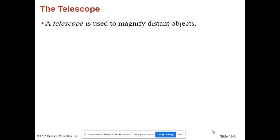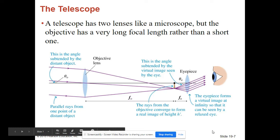The telescope. A telescope is used to magnify distant objects. So a telescope has two lenses like a microscope, but the objective lens has a very long focal length rather than a short one.